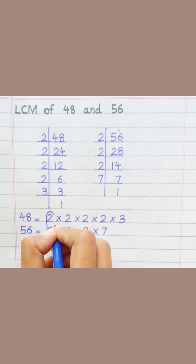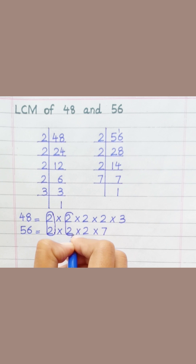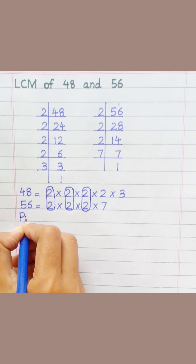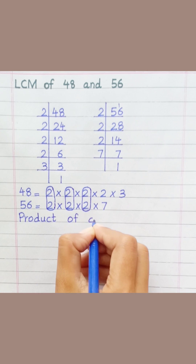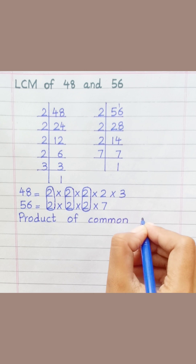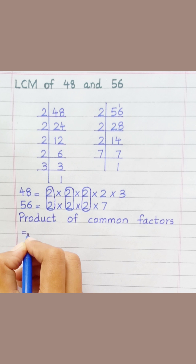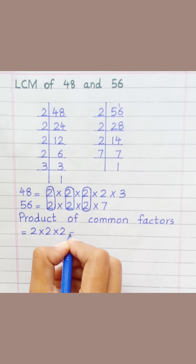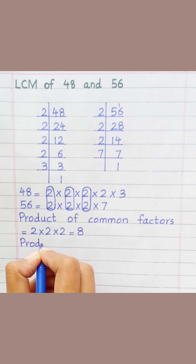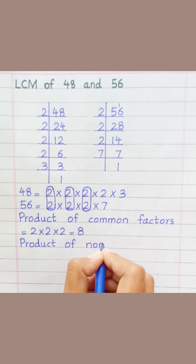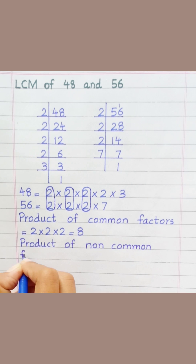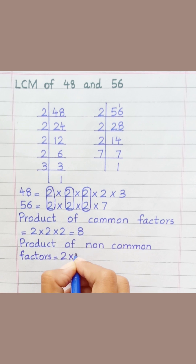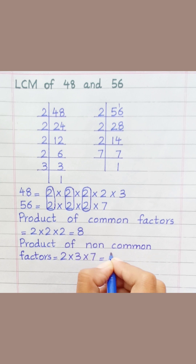Loop the common prime factors among both. Product of common factors equals two multiply two, multiply two — equal eight. Product of non-common factors equals two multiply three, multiply seven — equal 42.